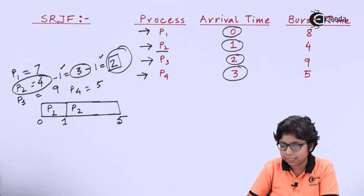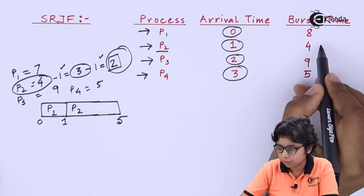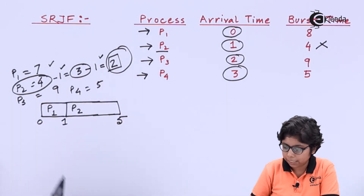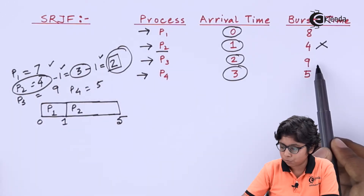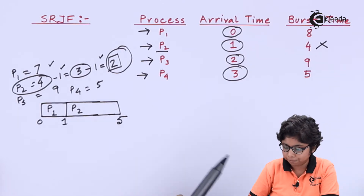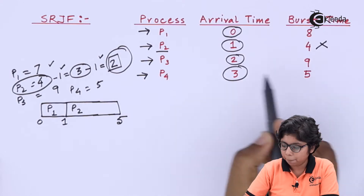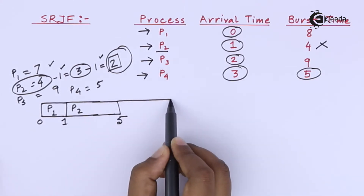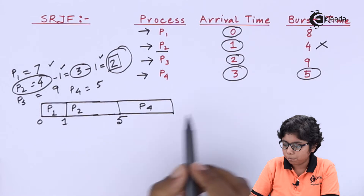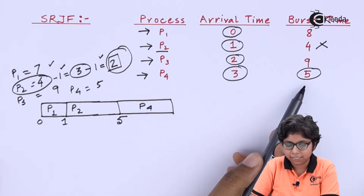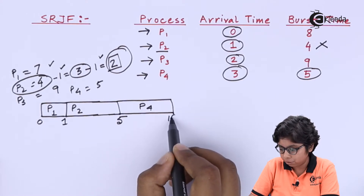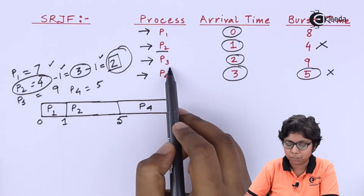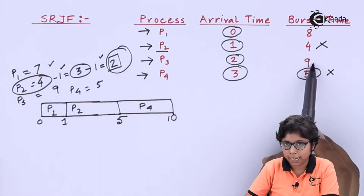At 5ms, P2 has completed. The remaining processes are P1 with 7ms, P3 with 9 minus 4 = 5ms, and P4 with 5ms. Among them, P3 and P4 are tied as the shortest, so we allocate P4. P4 completes its execution at 10ms. The remaining processes are P1 with 7ms and P3 with 9ms.